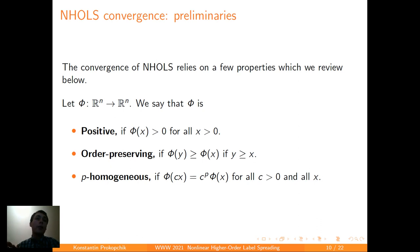Now, the important part of our algorithm is that we can prove the convergence of the algorithm. The convergence relies on a few properties which we review below. First is positiveness, then the order-preservingness, and then p-homogeneity.